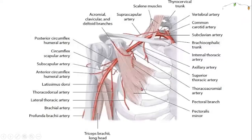And we can see this image. Firstly, we have the subclavian artery, and it goes to the axillary artery. We can see the thoracoacromial artery, its pectoral branch, and its deltoid branch. We can also see the posterior circumflex humeral artery, circumflex scapular artery, subscapular artery, anterior circumflex humeral artery, and brachial artery.